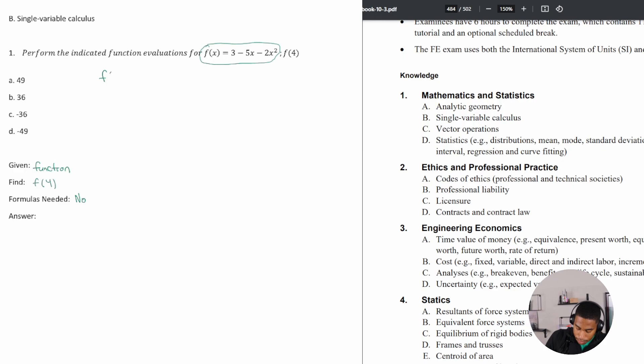f(4) for this particular function is equal to 3 - 5 times 4 - 2 times 4², and I put it in parentheses to kind of separate things.